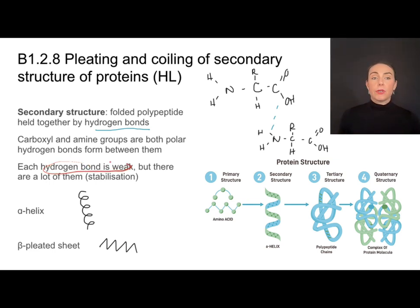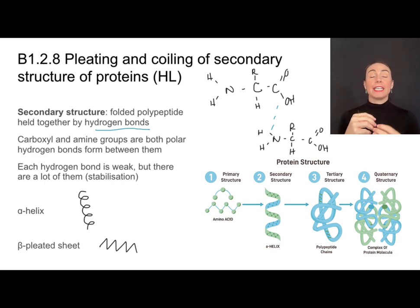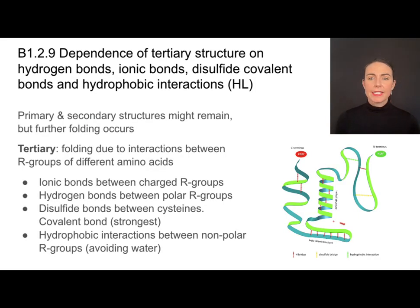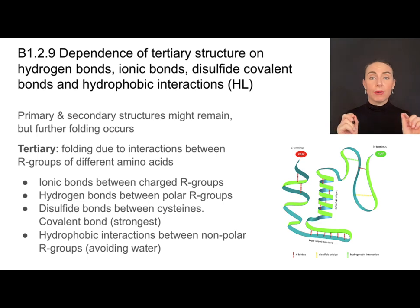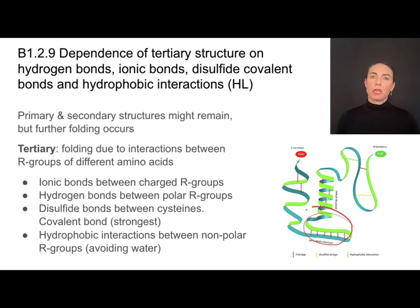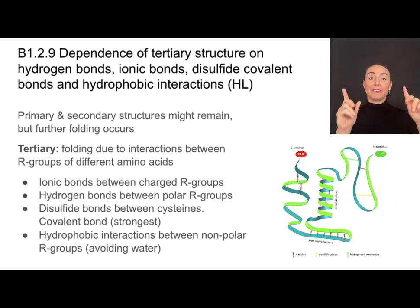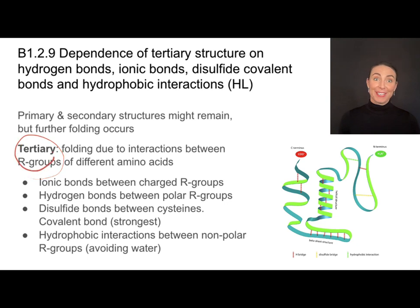Each hydrogen bond on its own is relatively weak, but when you have a lot of them together, that strength accumulates and this really helps to stabilize that protein structure. The beta pleated sheet and the alpha helix from secondary structure still remain, but there is additional folding in the chain due to interactions between the R groups. Remember that hydrogen bonds for secondary structure are between the carboxyl groups and the amine groups, whereas those causing tertiary structure are between the different R groups — tertiary structure folding is due to interactions between R groups.